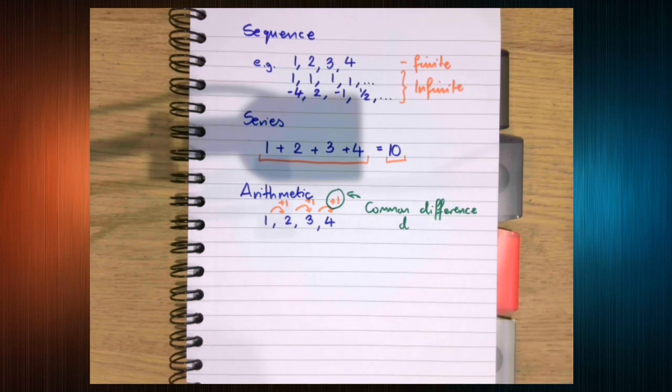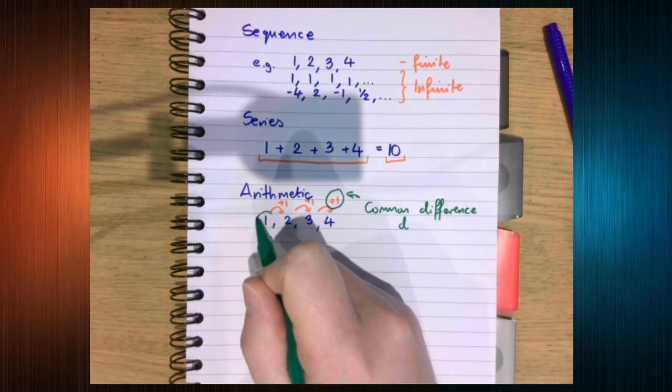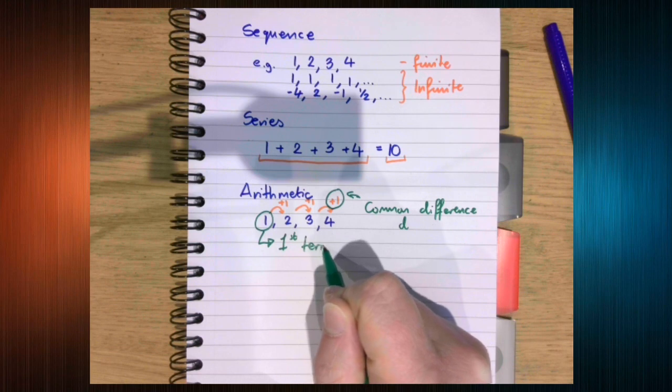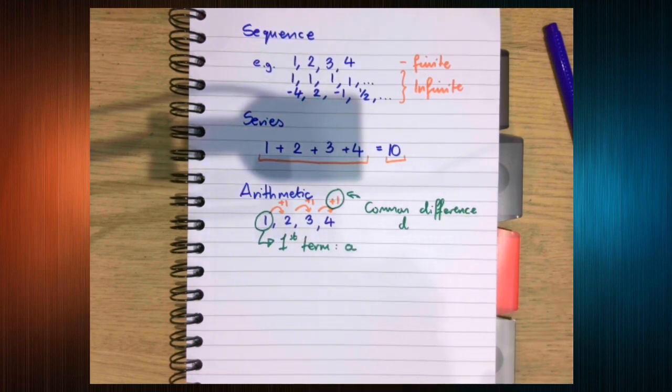So in general, any sequence has a first term. Arithmetic sequences have this common difference. In this case, the first term is one. And in general, we use the notation a.